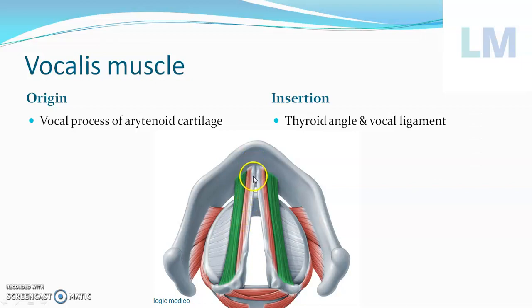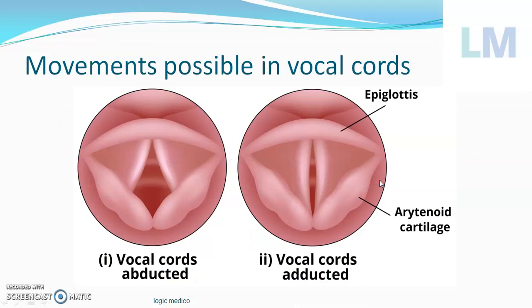A few fibers are also attached to the vocal ligament. To summarize: the origin is the vocal process of the arytenoid cartilage; fibers run anteriorly and slightly medially to reach the thyroid angle, with a few fibers also inserted into the vocal ligament. Regarding movements of the vocal cord — abduction is when both vocal cords move away from the midline, and adduction is when they move toward one another. However, since the vocalis is present within the vocal cord, it cannot cause abduction or adduction.